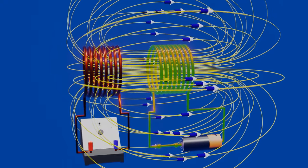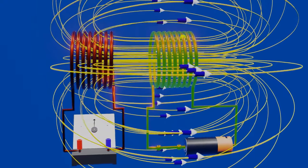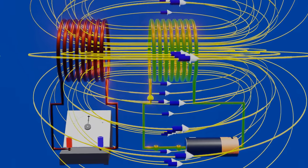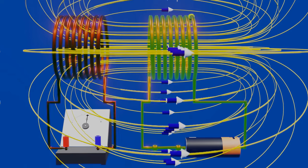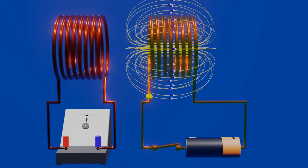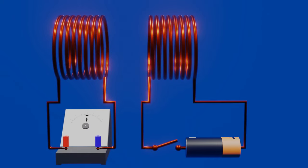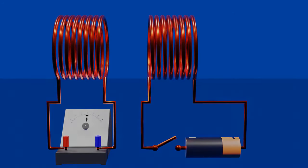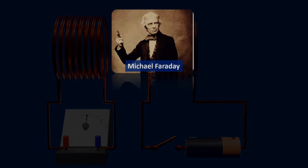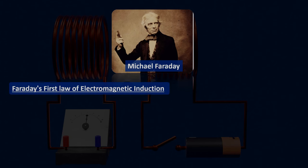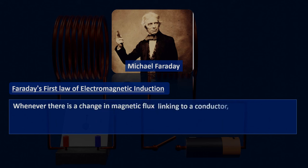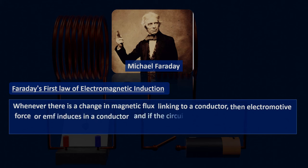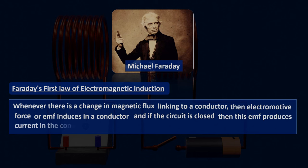In this case there is no motion involved, but still EMF is induced in the adjacent coil connected in series with the galvanometer. A similar thing happens when the circuit is opened, and indication of electric current can be seen clearly in the galvanometer. This phenomenon of electromagnetic induction was first experienced by Michael Faraday and named Faraday's first law of electromagnetic induction: whenever there is a change in magnetic flux linking to a conductor, electromotive force or EMF is induced in the conductor. And if the circuit is closed, this EMF produces current in the conductor.